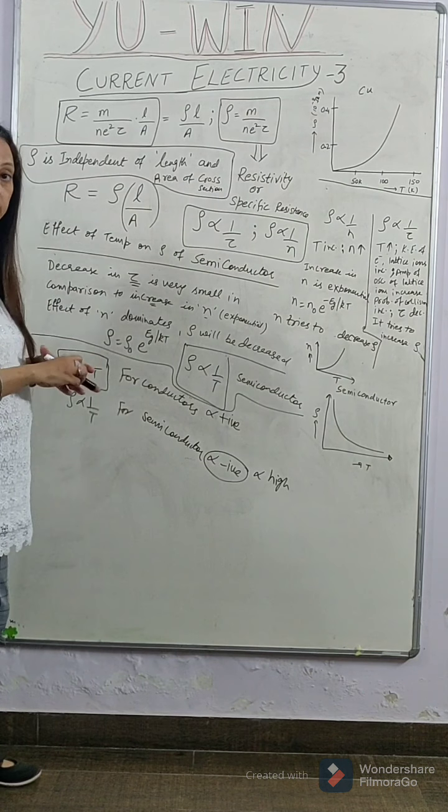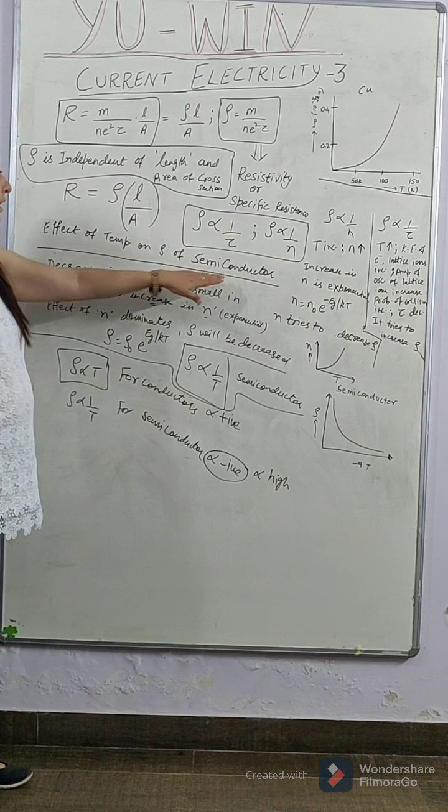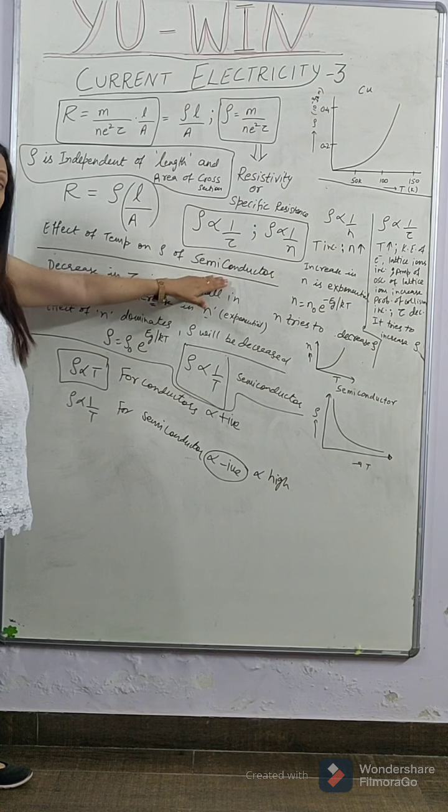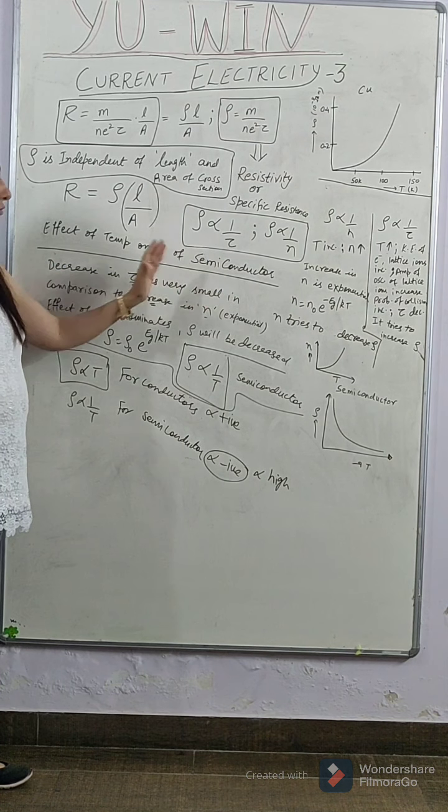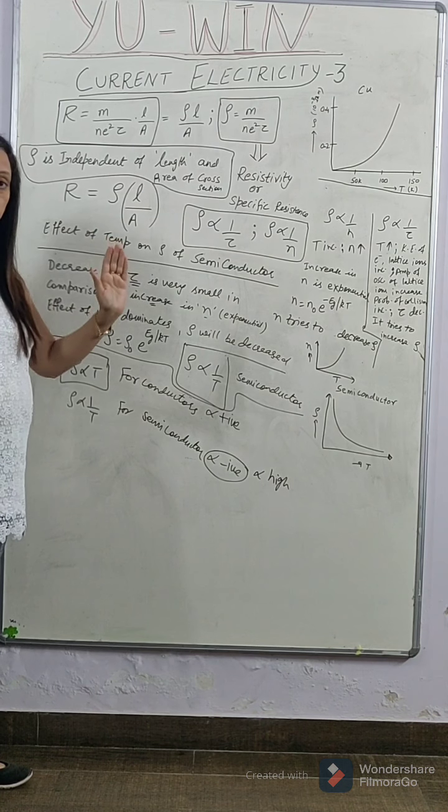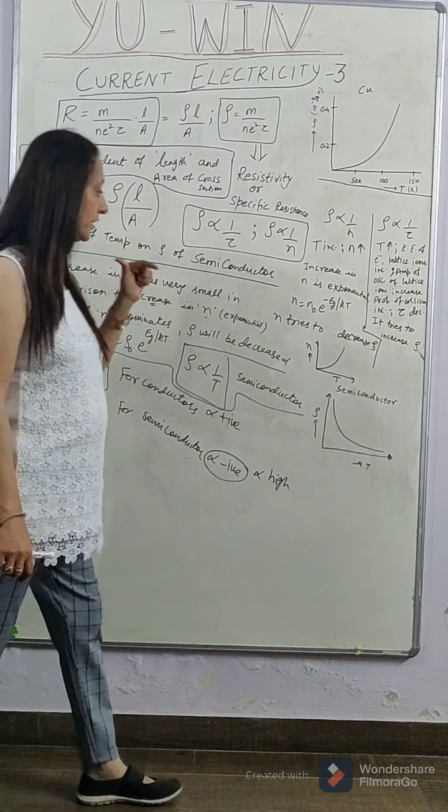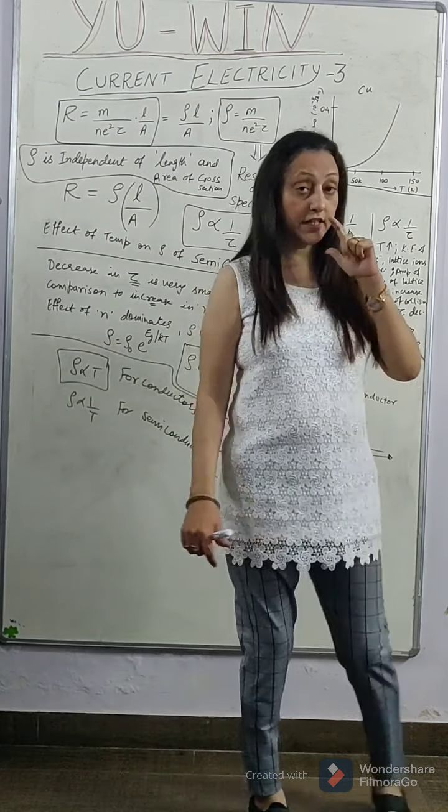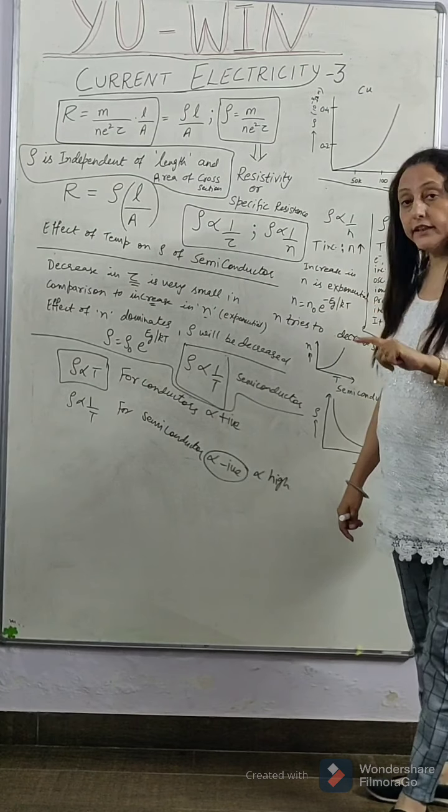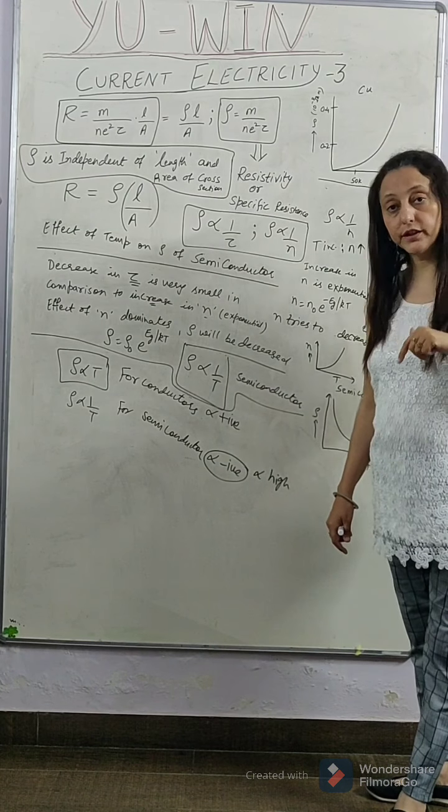Semiconductor is a material which behaves like insulator at zero kelvin and conductor at room temperature. Why? Because at room temperature, when we increase temperature, since it is a 14th group element which has 4 valence electrons which are covalently bonded, covalent bonds are weak.